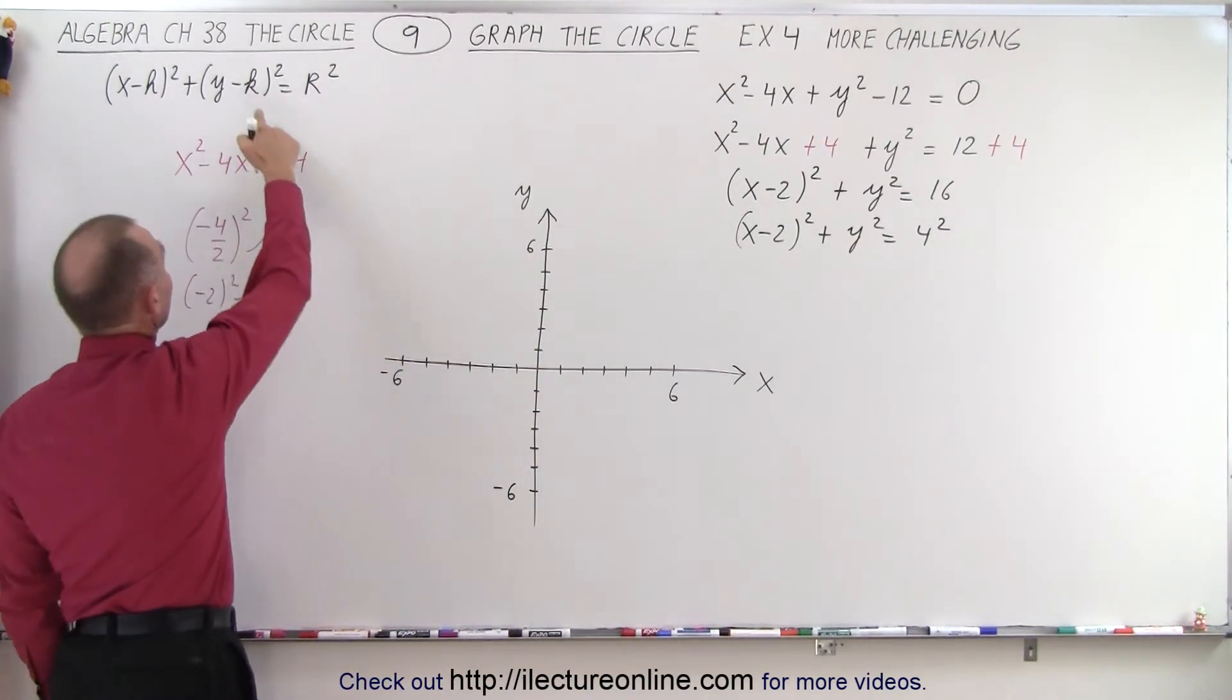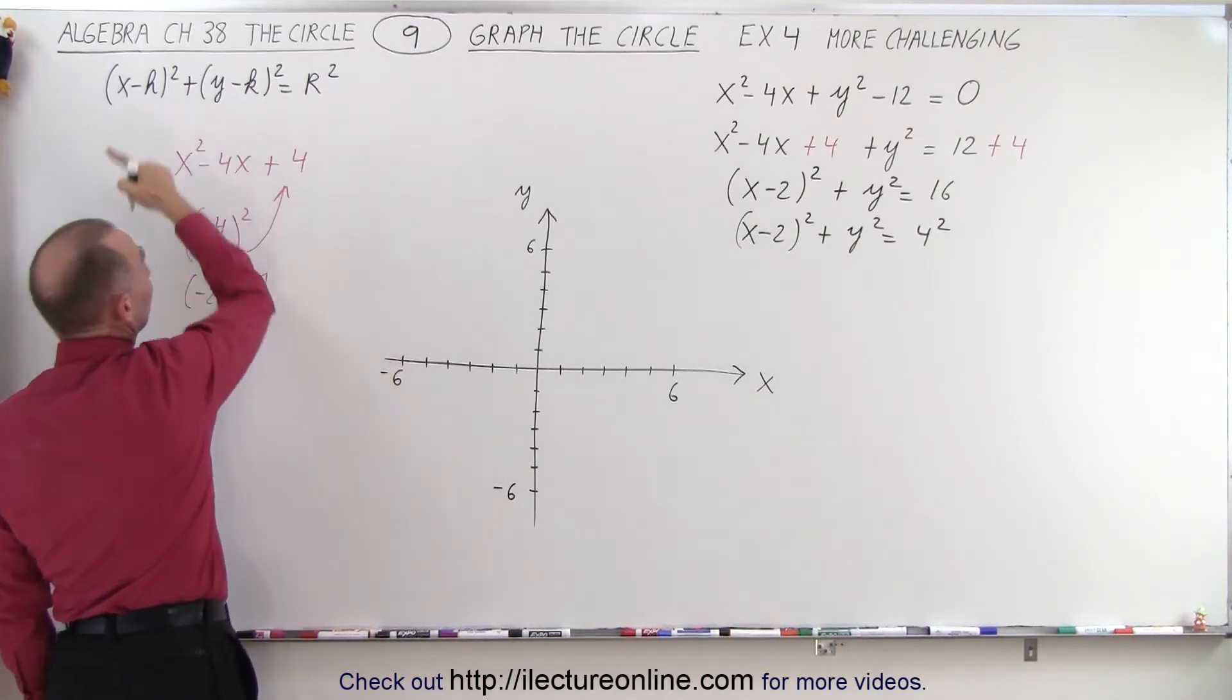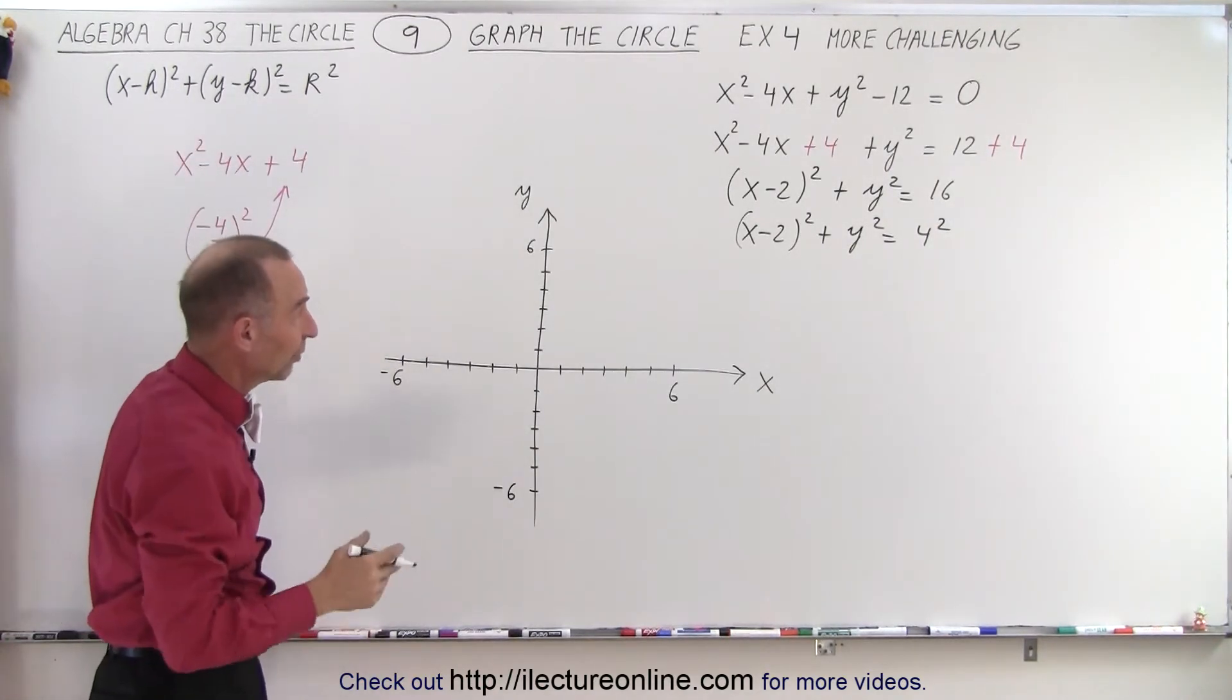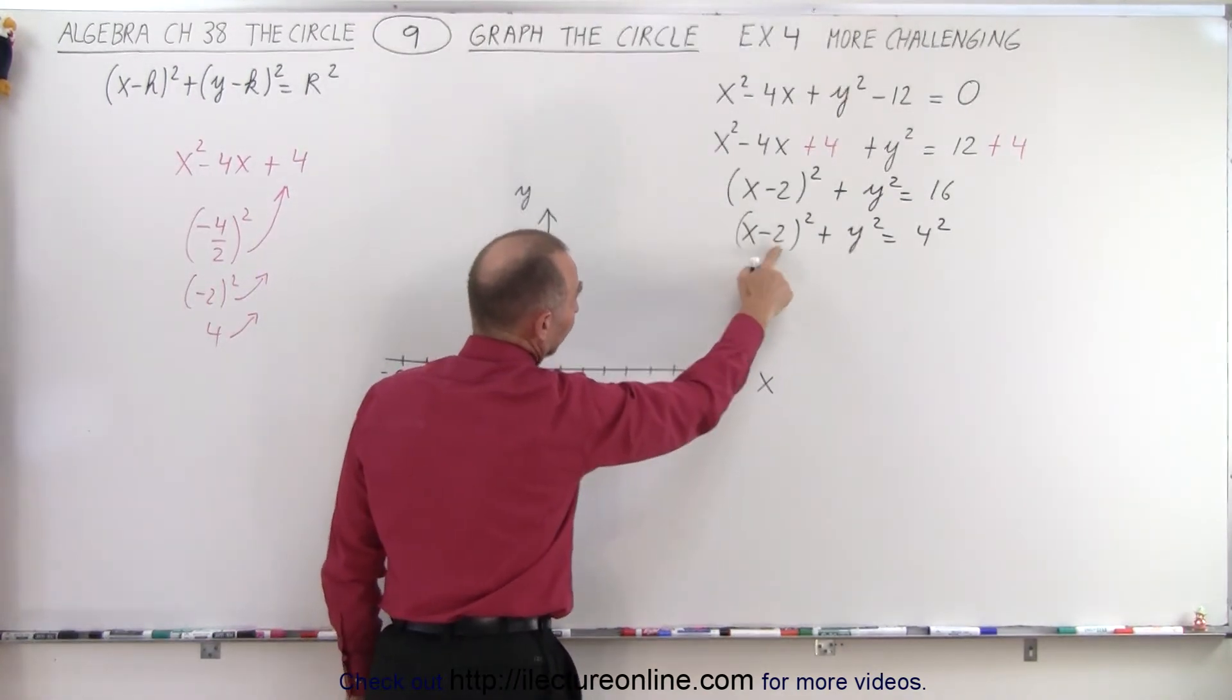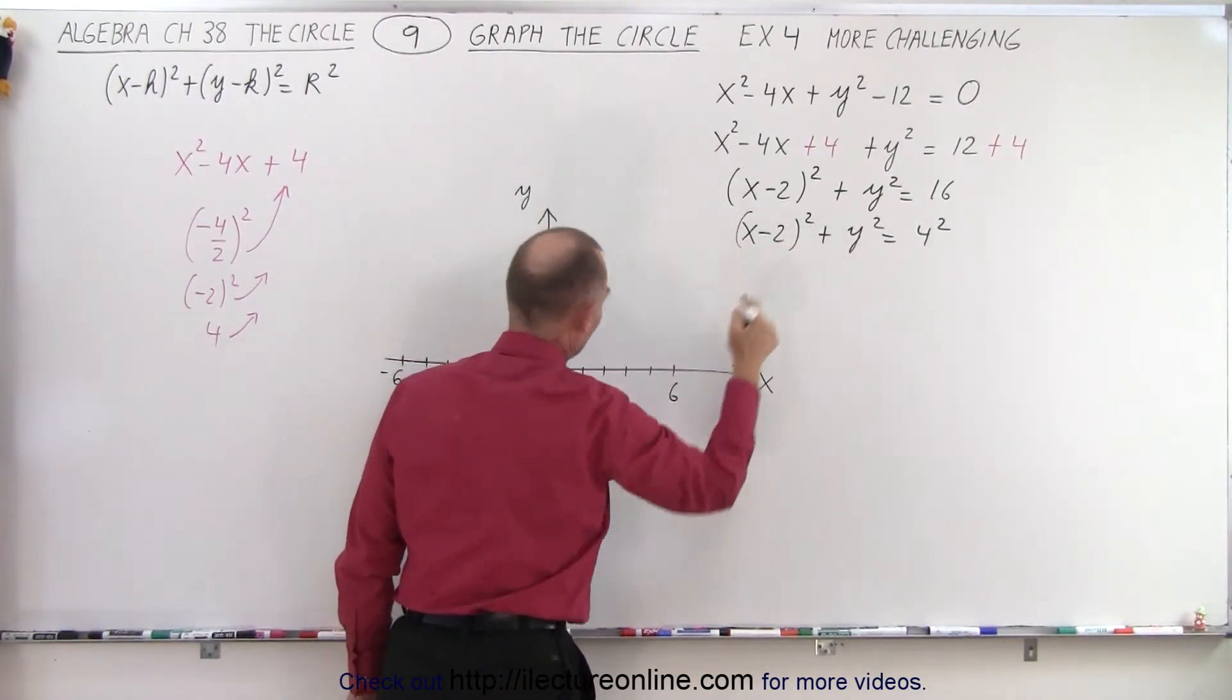In this case, of course, k will be 0 and h is equal to 2. So the next thing we do is find the center. So the center is at x equals 2, or in this case,